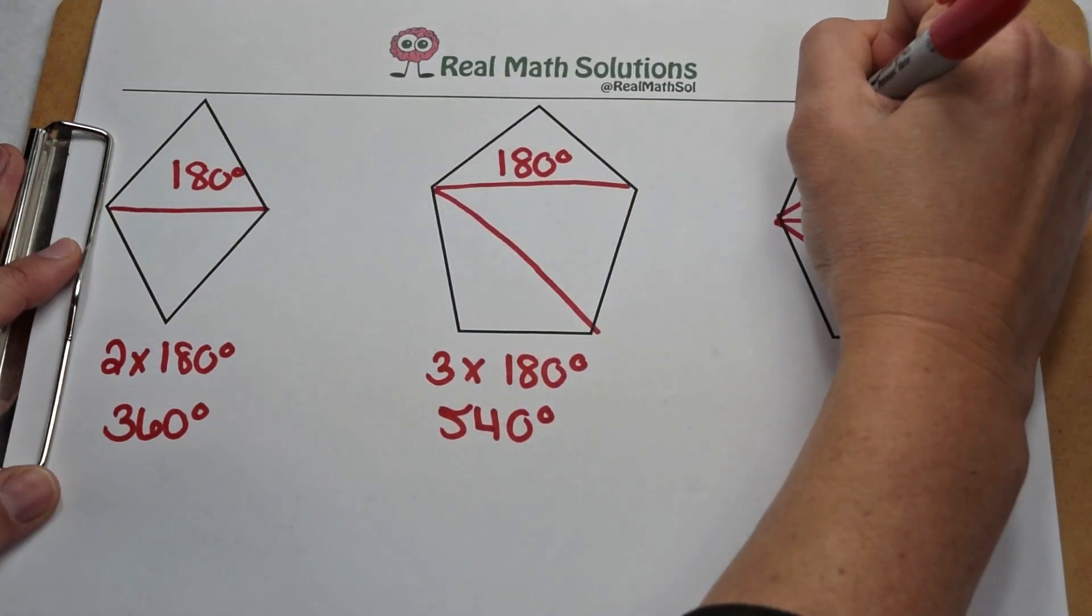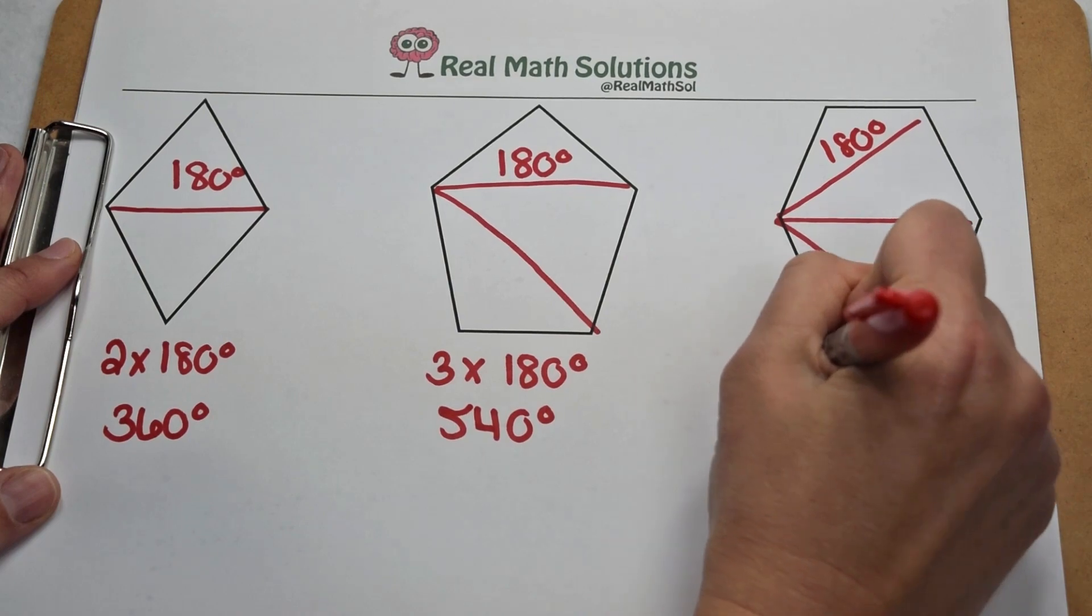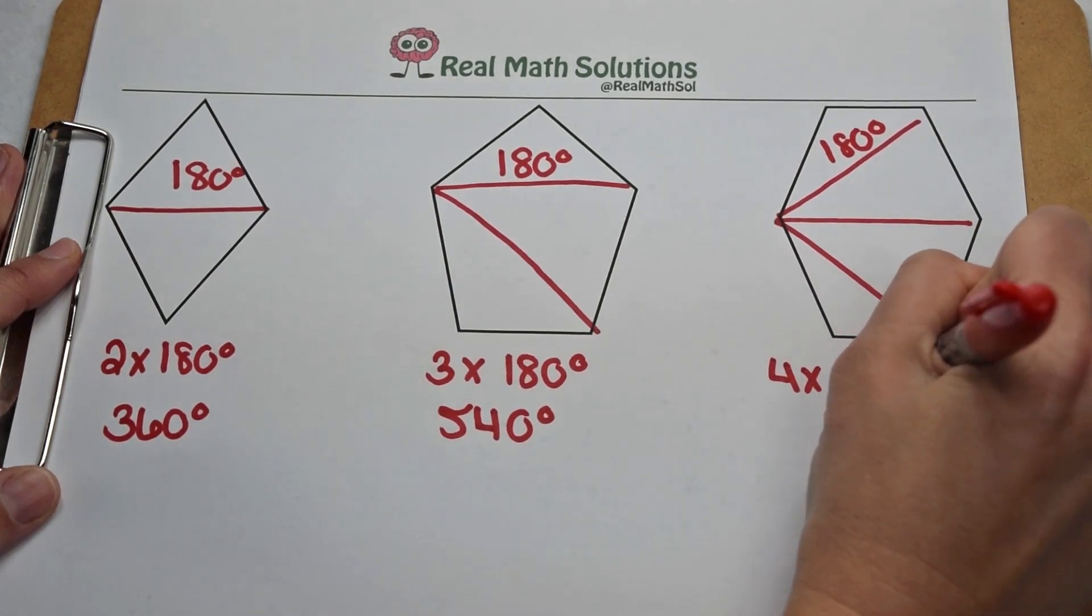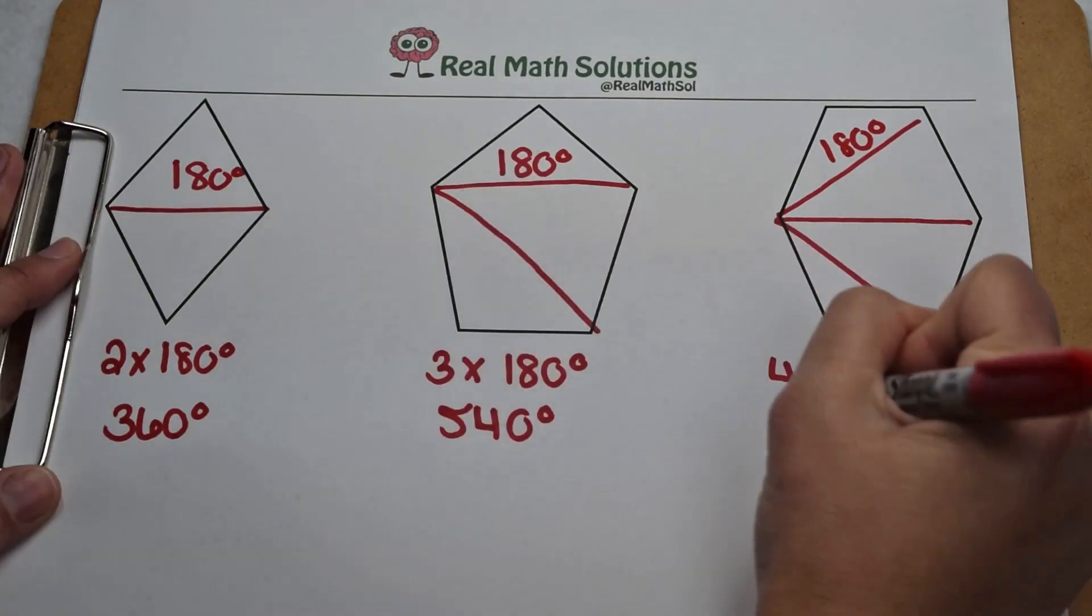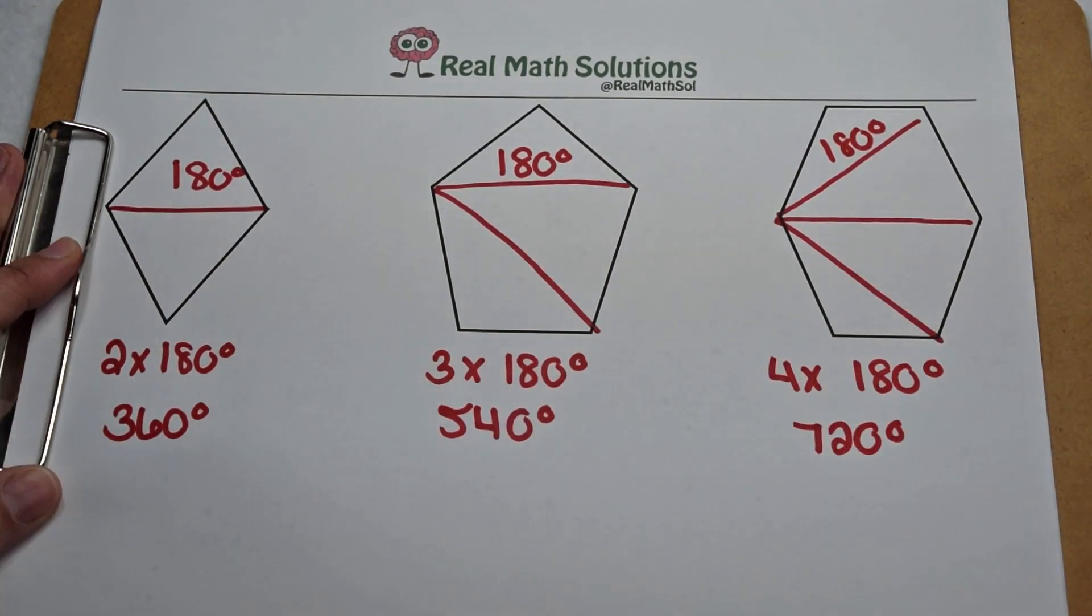Here on the hexagon, each triangle is worth 180 degrees and we've made four of them. So to find the interior angle sum, I'm going to multiply 4 times 180. 4 times 180 gives me an interior angle sum on the hexagon of 720 degrees.